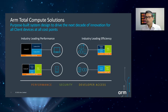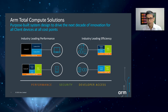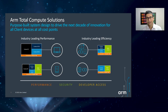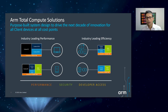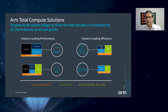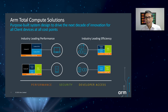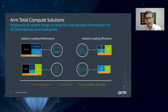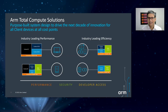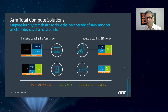In conclusion, ARM's Total Compute solutions, introduced recently based on the ARM v9 architecture, are the first embodiment of ARM's Total Compute strategy, built on the three fundamental drivers of performance, security, and developer access. These solutions will provide the widest choice to ARM's partners for driving the next decade of innovation across all client devices and all cost points.